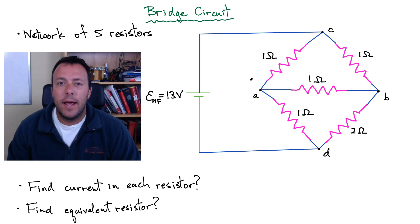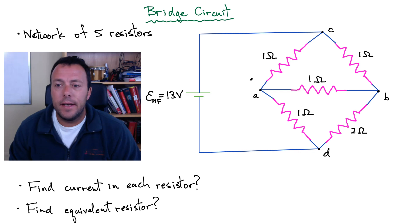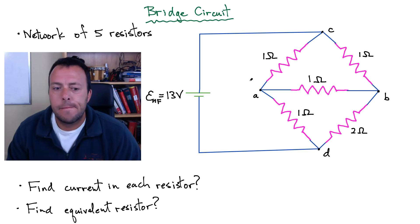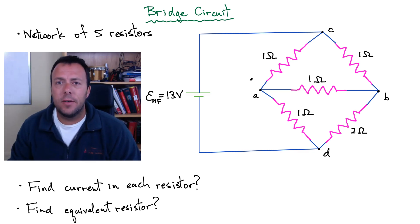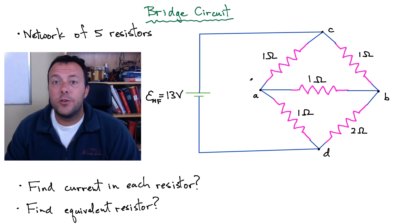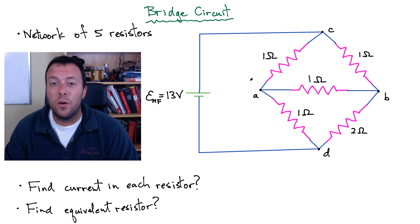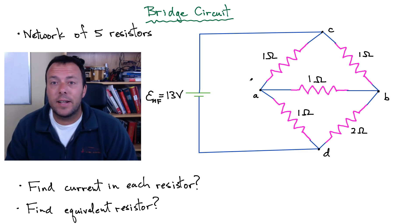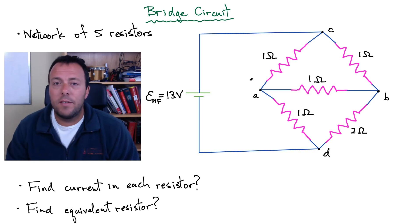Today I want to show you how to analyze a bridge circuit. I've got the bridge circuit drawn here on the right — it's a network of five resistors arranged in this bridge circuit setup. The goal of the problem is to find the current in each resistor and also to find an equivalent resistance. You've probably learned tricks to find equivalent resistors for resistors in series or in parallel, however if you have a close look at this circuit and try to use any of those tools, you're unable to do that. This is one example where you can't simplify it directly using those tricks.